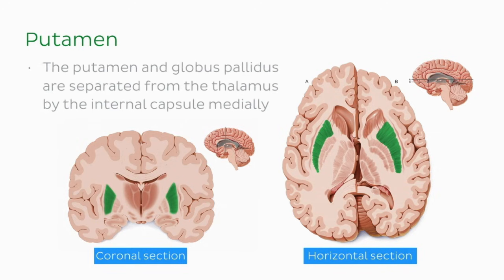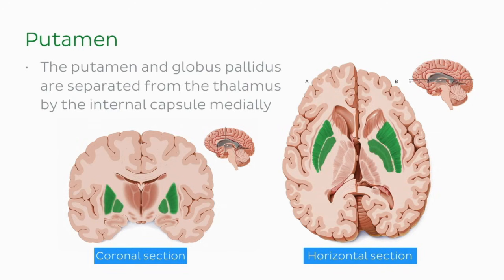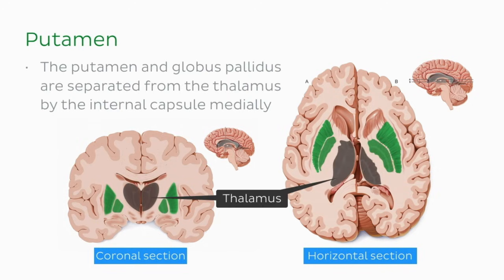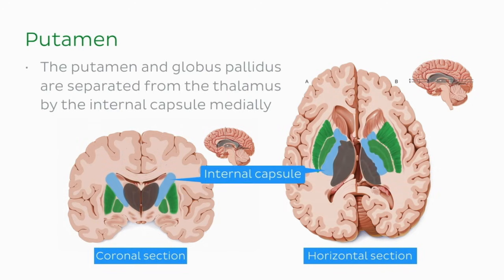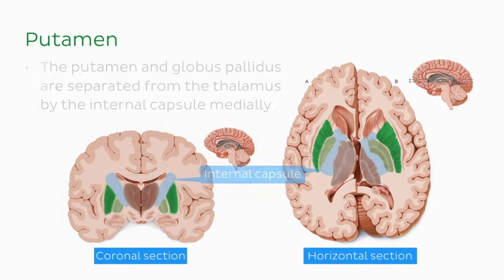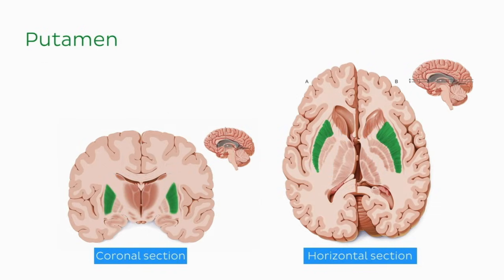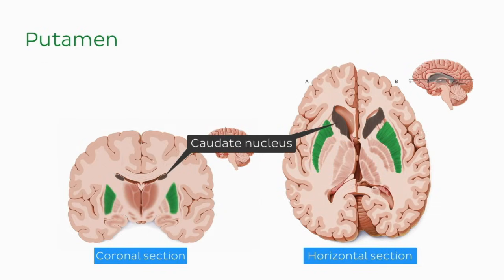The putamen and the globus pallidus are separated from the thalamus by the internal capsule medially. Fibers connect the putamen to the caudate nucleus along most of its length, but are the most pronounced in the anterior region.